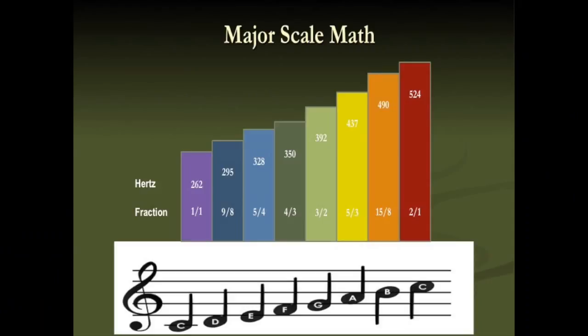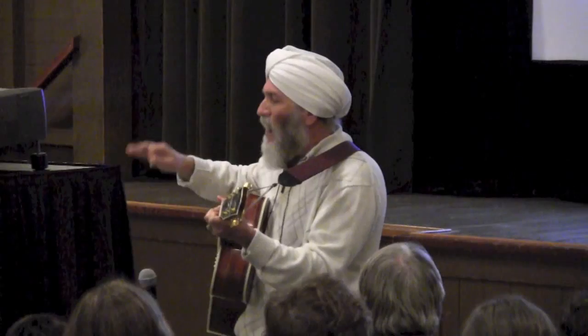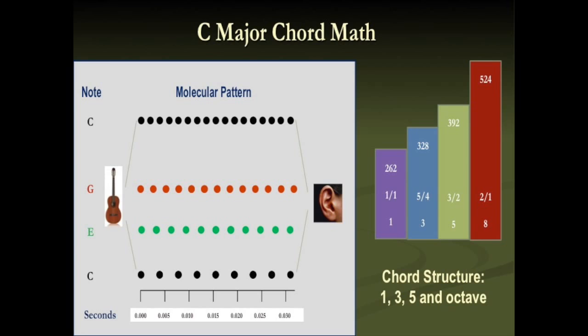When I play the major scale, the frequencies increase in a fractional proportional way — nine-eighths, five-fourths, all the way to an octave: two times the frequency, twice the pitch. The first, third, fifth, and eighth notes give us a major chord, and it has the exact molecular pattern you see on the screen. It creates a happy sound.